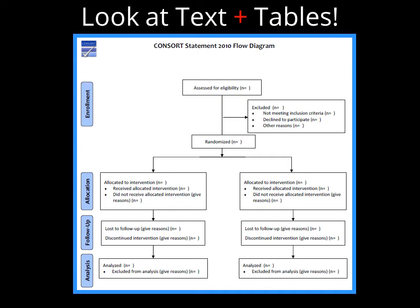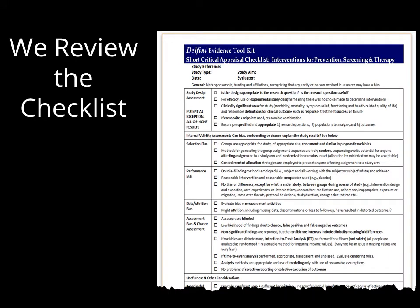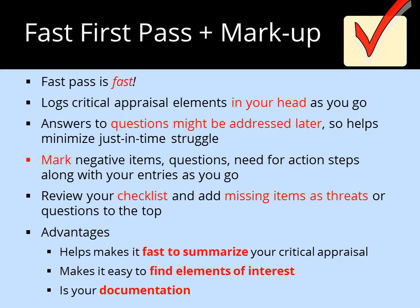Important word of advice: look at not only what's going on in the tables, but also the text. Sometimes you get surprised if things are not consistent — this is not atypical, unfortunately. When we're done with our markup, we take our critical appraisal checklist — the professional tool — and review it to see if there's anything they have not addressed. An important point is that they have to tell us details of things like randomization. If they only say it's randomized but don't give us details, then it goes on the list of threats to validity. This method is really fast and very efficient — you notice things as you go, mark negative items, questions, and action steps. It becomes your documentation.